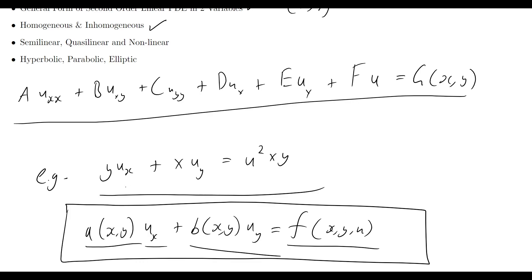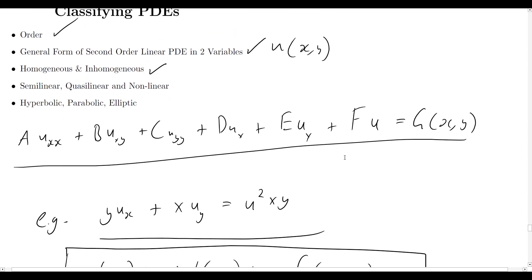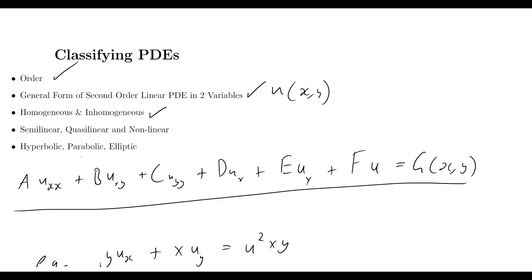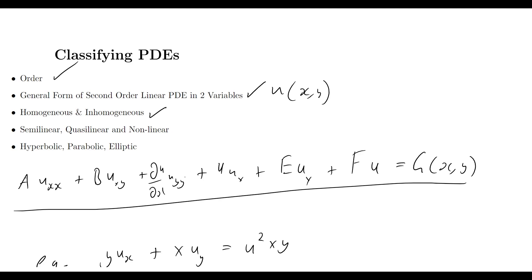For a quasi-linear PDE, the only change from the general form is that the coefficients a, b, c, d, e, f — instead of being constants or simple functions of x and y — can now be functions of u and of the partial derivatives of u. For example, c could be du/dx, or d could simply be u. The key point is that these coefficient terms must be of lower order than the term they multiply.